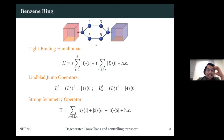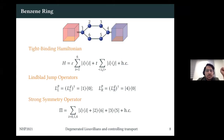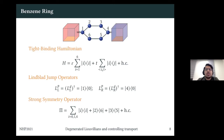Moving to the next example: the benzene ring. I add two more sites to the problem, stick to the same tight-binding Hamiltonian with hopping T, with similar Lindblad operators: a ground state and jumps between zero and one, and zero and four, from both left and right baths. A strong symmetry operator again exists. Similar to the four-site model, the axis along sites one and four is the axis of symmetry — exchanging sites two with six, and three with five, leaves everything the same. The strong symmetry operator exchanges two with six and three with five.